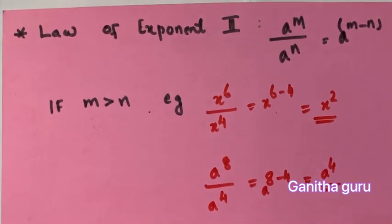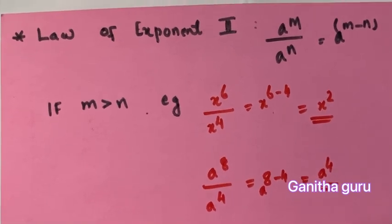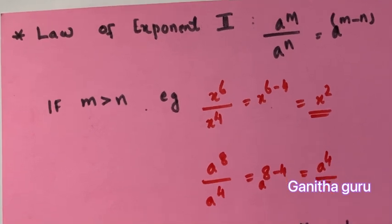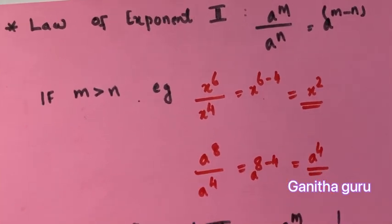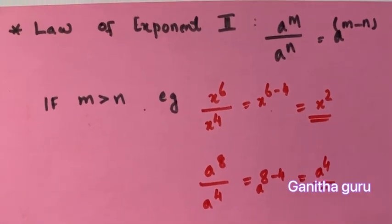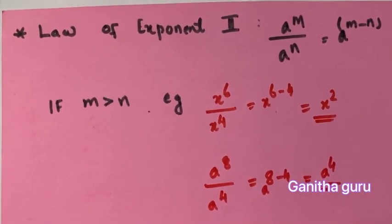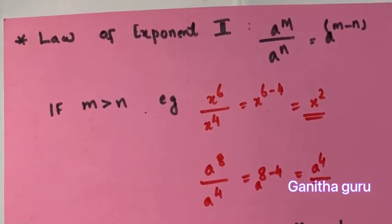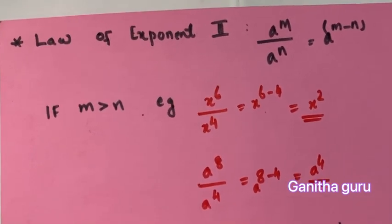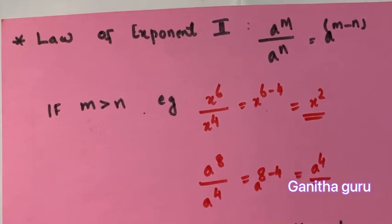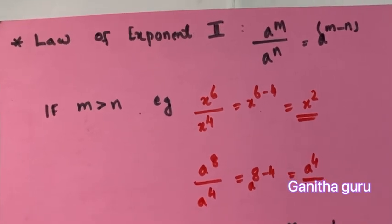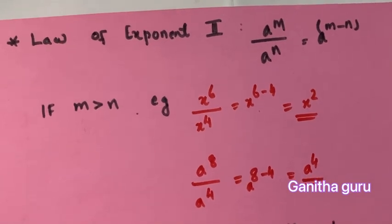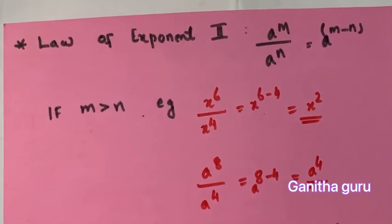The next law is the division law: a raised to m divided by a raised to n. The exponents are subtracted — the powers subtract. For example, x raised to 6 by x raised to 4 equals x raised to 2. Similarly, a raised to 8 by a raised to 4 equals a raised to 4.